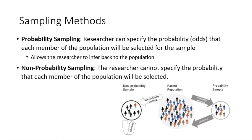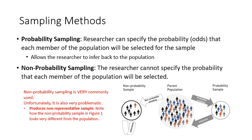A more common method that's often used, even though it's problematic, is called non-probability sampling. In this case, the researcher isn't intentional in finding a sample that represents the population — they use methods that don't allow them to have a representative sample. Look at the circle under the non-probability sample example.